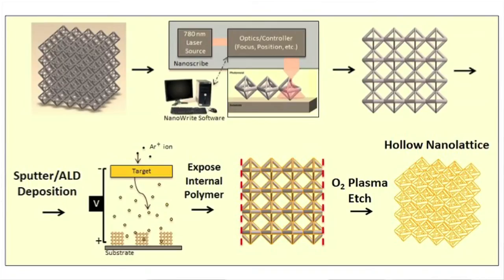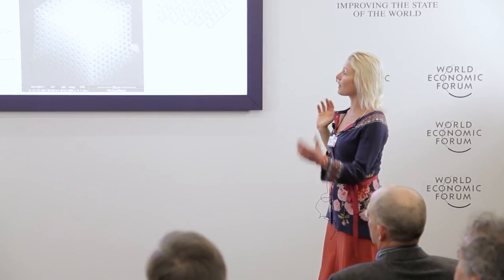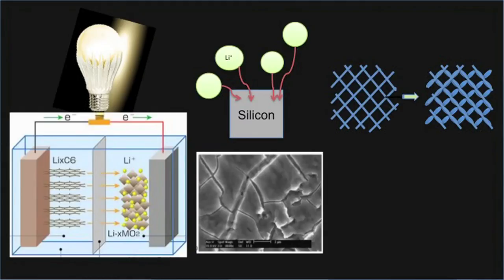I'd like to explain how we make them. We use so-called two-photon lithography to write a three-dimensional structure in a polymer — we raster a conversion cone through space to generate a sacrificial scaffold. We then coat it with a material of interest, expose the internal polymer scaffold, and etch it out. This technique can write down to a 3D voxel on the order of 100 nanometers. This is a computer image and this is the actual nanolattice made out of a completely hollow ceramic — you can see how you go straight from computer design to the real thing.